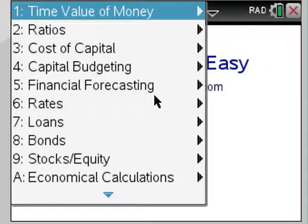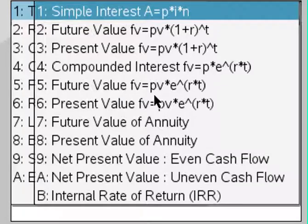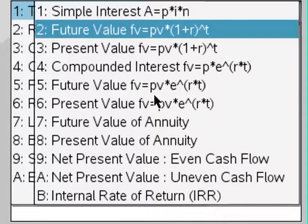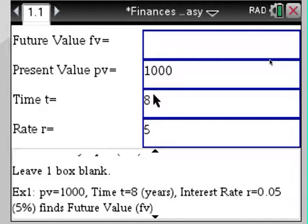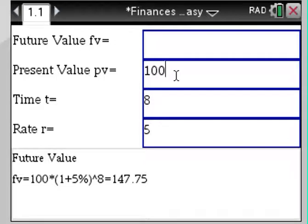Let me give you some details, some examples such as time value of money. Let's do finding the future value. As usual, you are leaving one box blank to find the future value in this case and enter the other boxes. So let's say we have a present value of $100 over eight years at a 5% rate. You can see the formula set up right here.